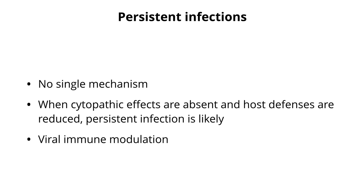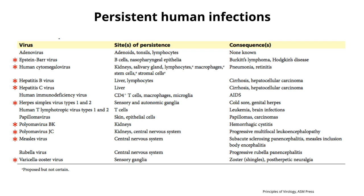Not only is the virus biologically not cytopathic — that's one thing that has nothing to do with the immune response — but in addition, there are antagonists of any immune responses that are occurring, and that is one of the ways that we get persistence. Here is a partial list of some persistent human infections, and the red asterisks are those I'm going to touch upon today. We have a list of different viruses, in the middle are the sites of persistence in the body, and on the right the consequences. For example, adenoviruses are known to persist in adenoids, tonsils, and lymphocytes — all lymphoid tissues — and we can detect virus but there's no consequence. Epstein-Barr virus and human cytomegalovirus have a variety of sites of persistence and they have consequences in the host.